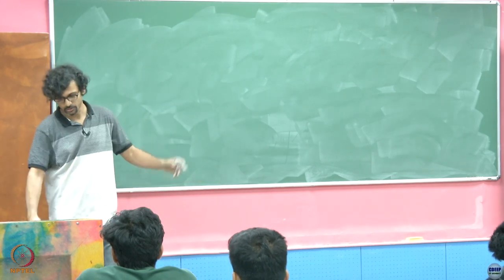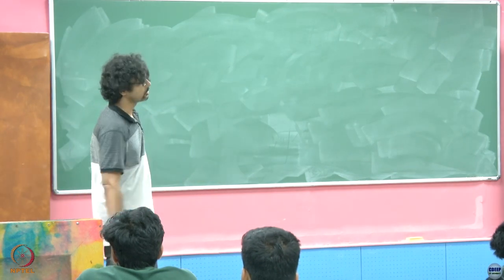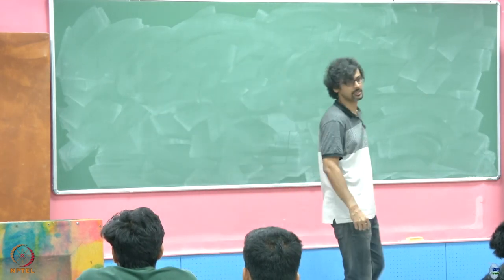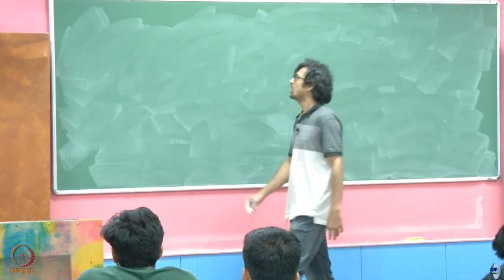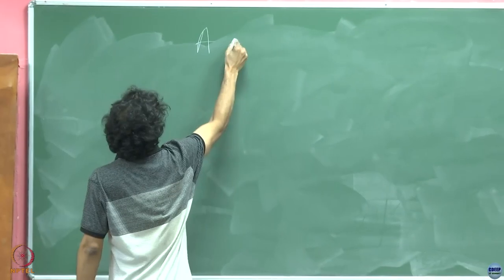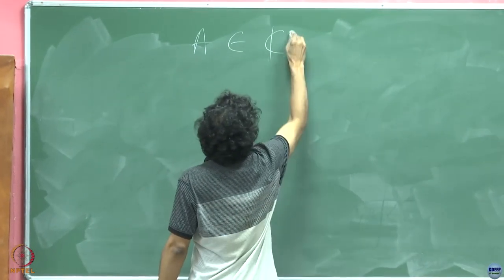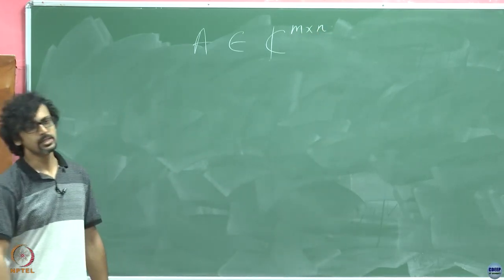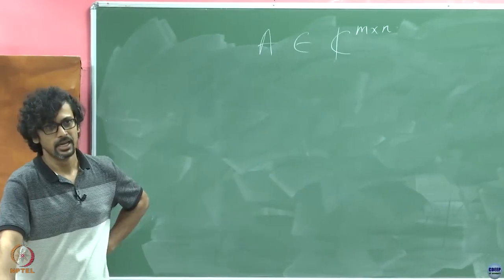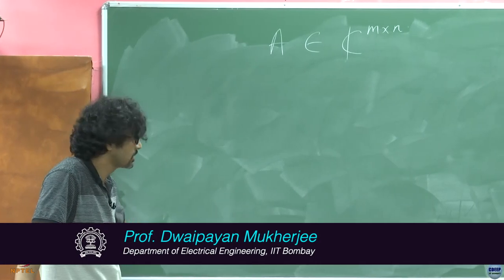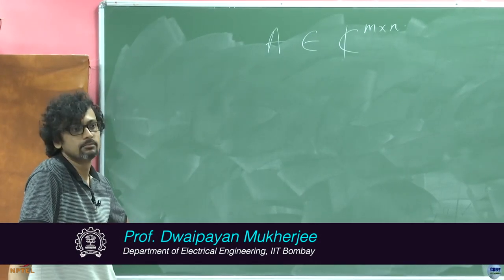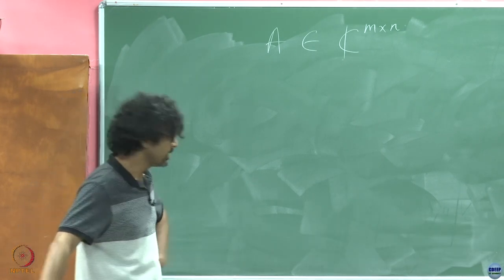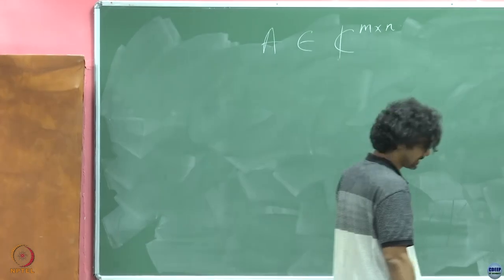We will drop the pretense of dealing with general operators and just talk about n×n or m×n complex matrices. We start with some A that is of size C m×n. As we proceed with the proof, it will really not matter whether m is greater than n or less than n — the idea will still carry forward. In general, we can just assume that m is less than n.